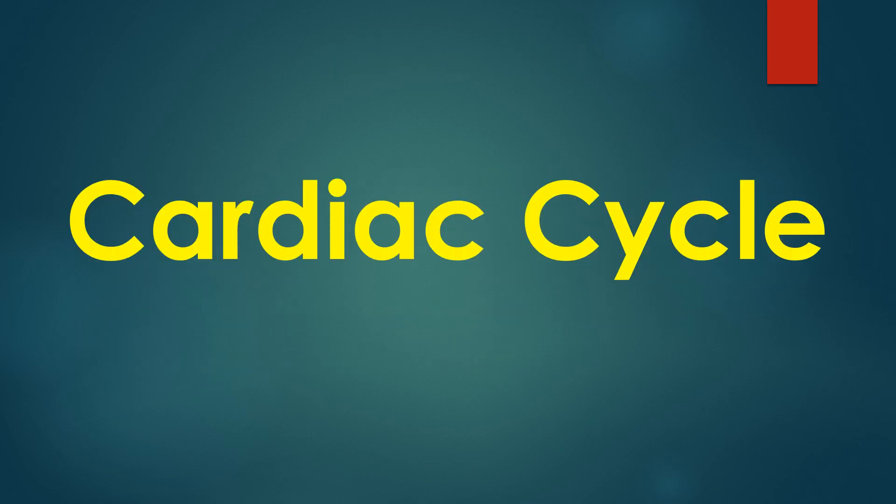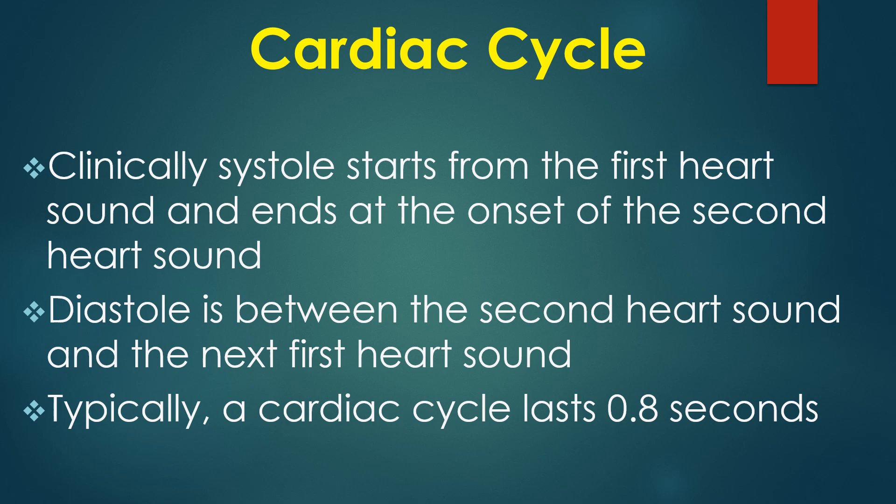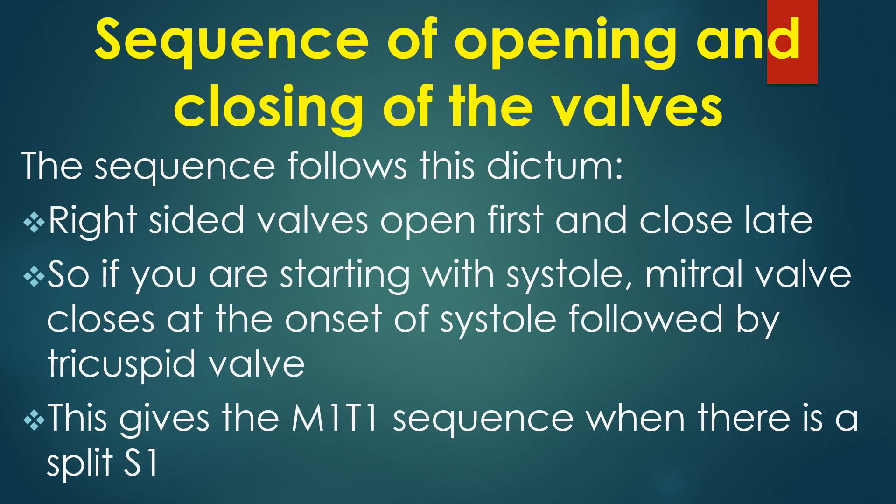The cardiac cycle consists of all events occurring in the heart during a systole and the following diastole. Clinically, systole starts from the first heart sound and ends at the onset of the second heart sound. Diastole is between the second heart sound and the next first heart sound. Typically a cardiac cycle lasts 0.8 seconds. Right-sided valves open first and close late.